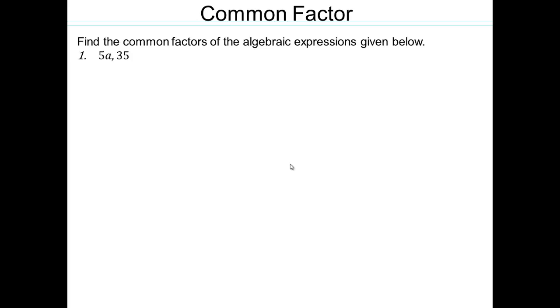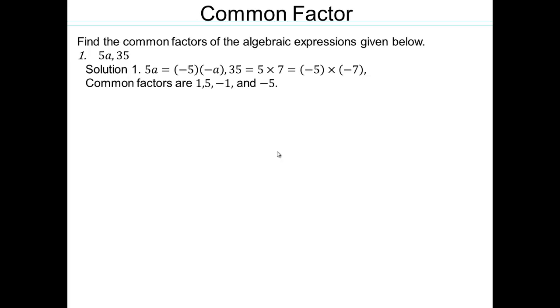Let's find common factors of the expressions below. Take 5a and 35. What is common? Well, 5 goes into 5a, and 5 is a factor of 35 also. So the common factors are 5 and 1. We can also say negative 5 and negative 1. For most people, we work with positive numbers, but negative factors are shown here so you can see you may sometimes have to work with them.